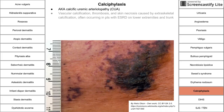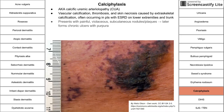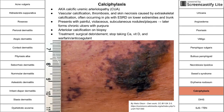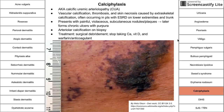Calciphylaxis is a systemic problem with skin manifestations — vascular calcification, thrombosis, and skin necrosis caused by extraskeletal calcification. It often occurs in patients with end-stage renal disease on their lower extremities and trunks. It presents with painful violaceous subcutaneous nodules and plaques that later form chronic ulcers with purpura, with arteriolar calcification on biopsy. Treatment is surgical debridement, and patients should stop taking supplemental calcium, vitamin D, and anticoagulants like warfarin.